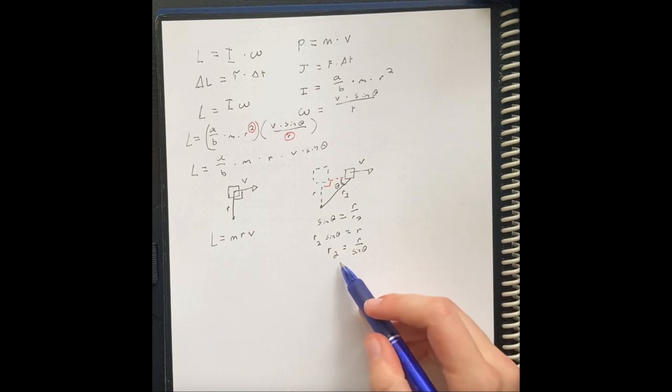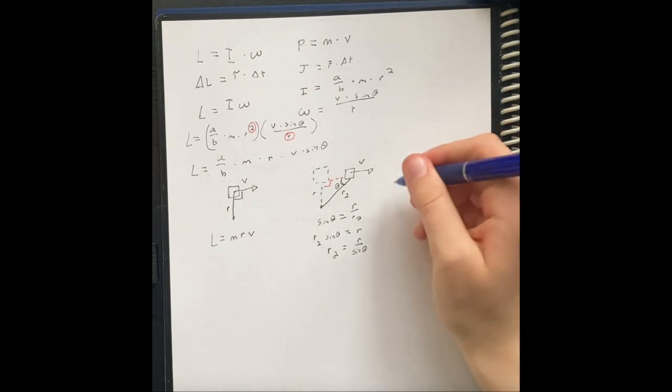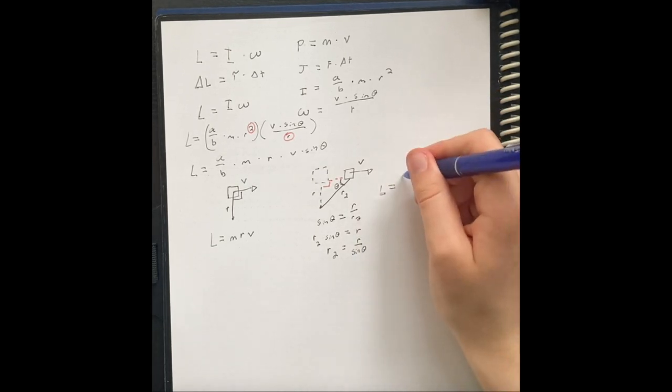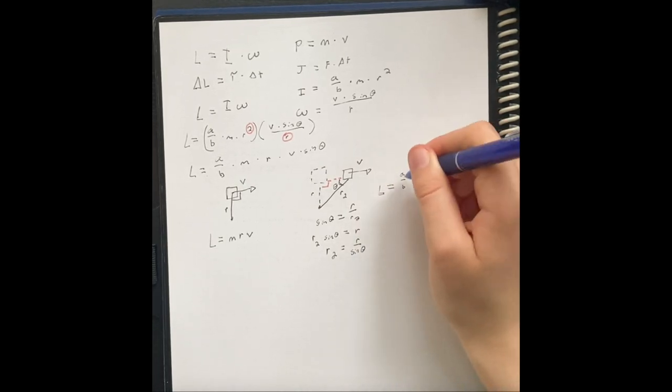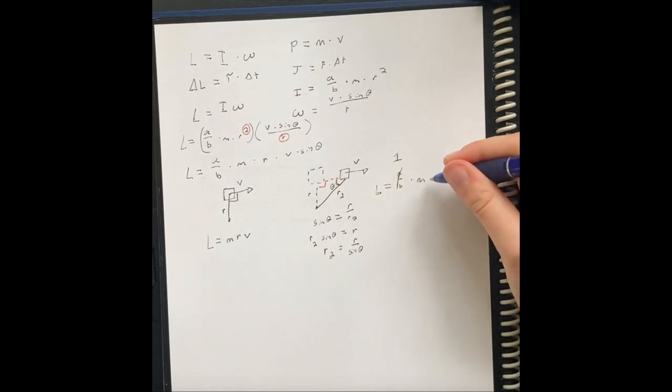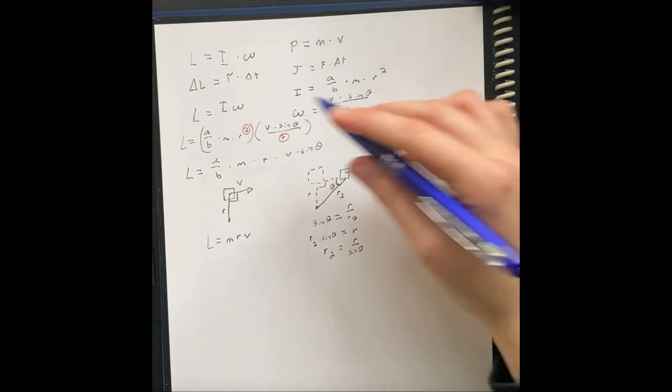So now, we have r2 is equal to r divided by sine of theta. Let's write our angular momentum equation. a over b. Oh, that's actually just going to be one because it's a point mass. times mass times, well,